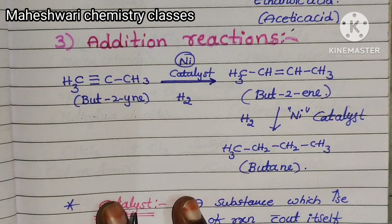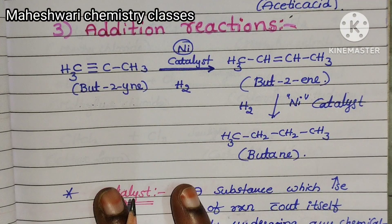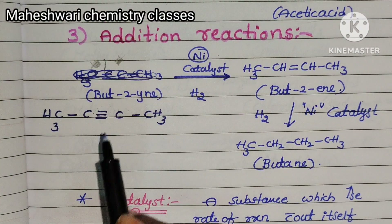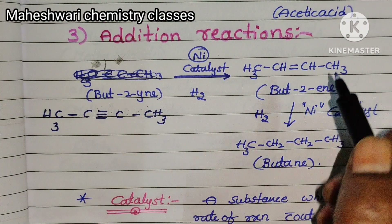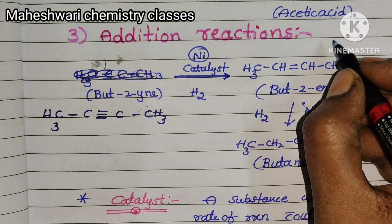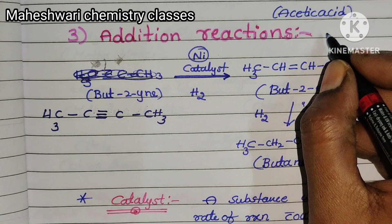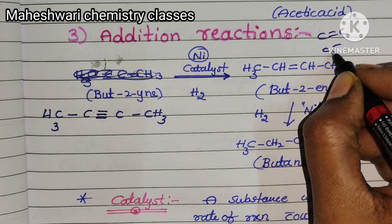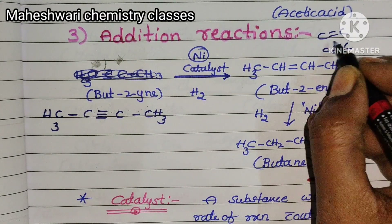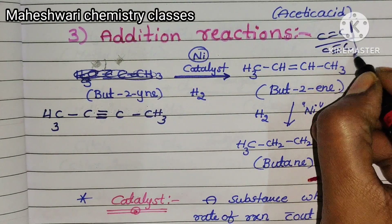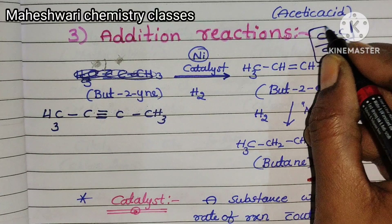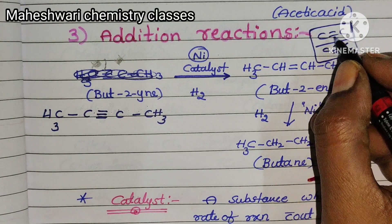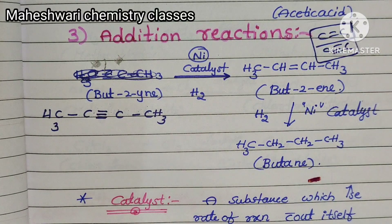The third reaction is addition reactions. In addition reactions, we have unsaturated hydrocarbons — either double bond or triple bond. In this case, a double bond undergoes hydrogenation, converting to single bonds.